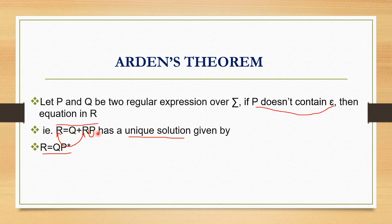To summarize: given an equation R is equal to Q plus RP, where Q and P are regular expressions and P doesn't contain epsilon, this equation has a unique solution given by R is equal to QP star. This is Arden's theorem. So R equals Q plus RP implies R equals QP star.